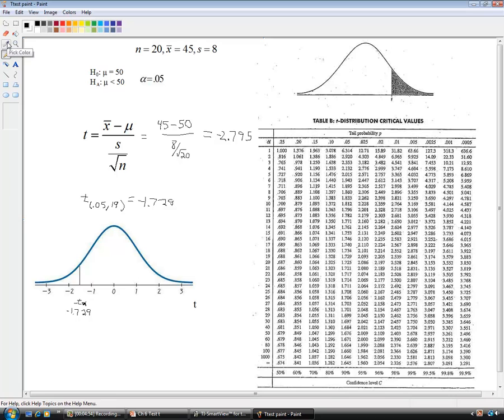So that value is negative 1.729, and that's negative t of alpha. Okay, so our critical area is going to be this area here, because it's only strictly less than. So there's our rejection region. Rejection region right there.